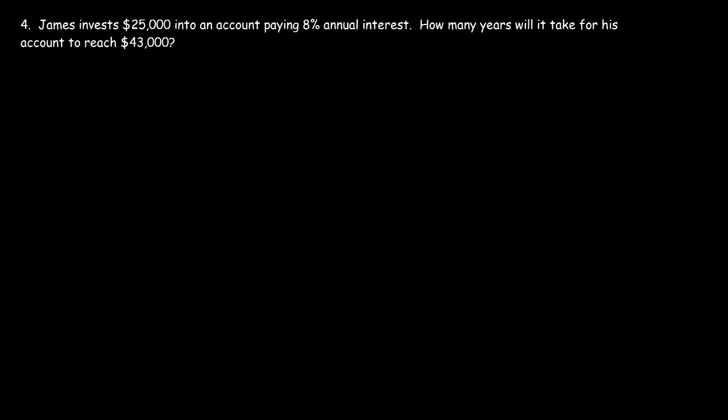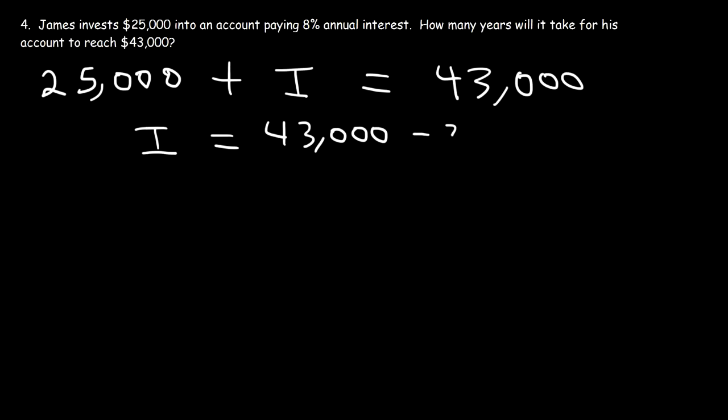Number four, James invests $25,000 into an account paying 8% annual interest. How many years will it take for his account to reach $43,000? So the principal is $25,000. And interest is going to be added to that principal over time. And his final account value is going to be $43,000 after a certain time period has elapsed. So the interest that he receives during that time is the difference between $43,000 and $25,000.